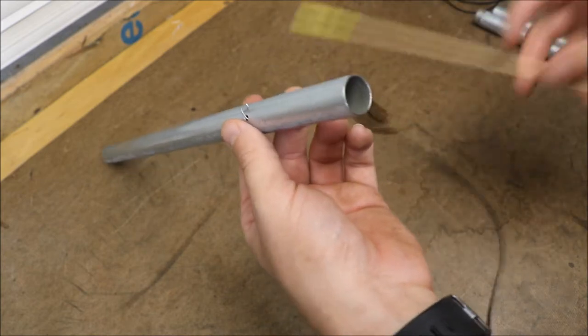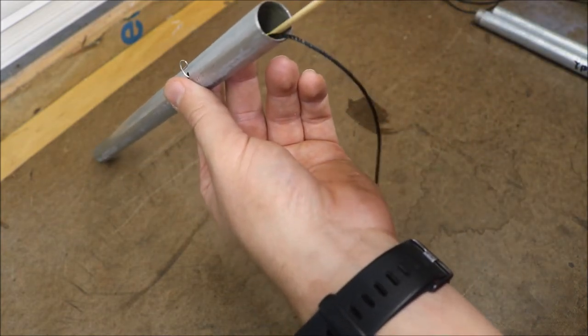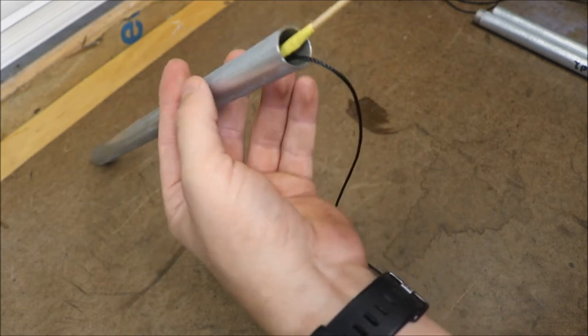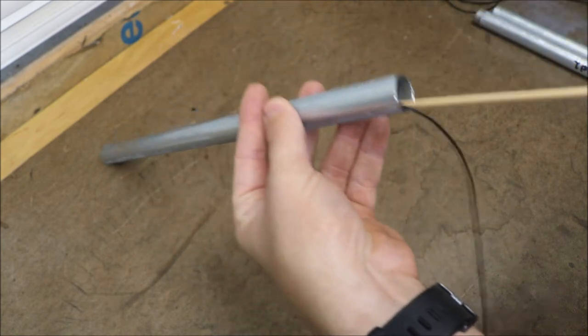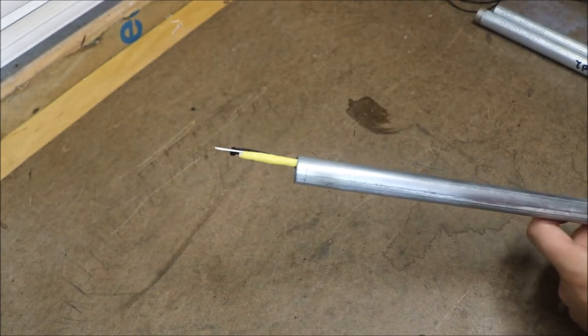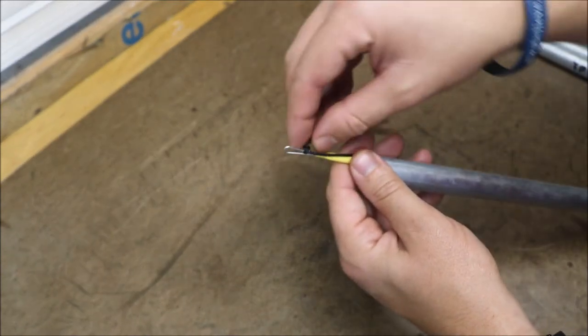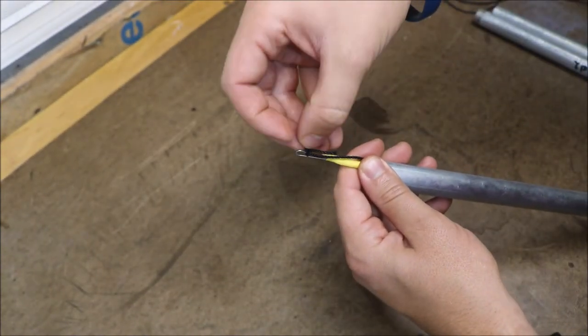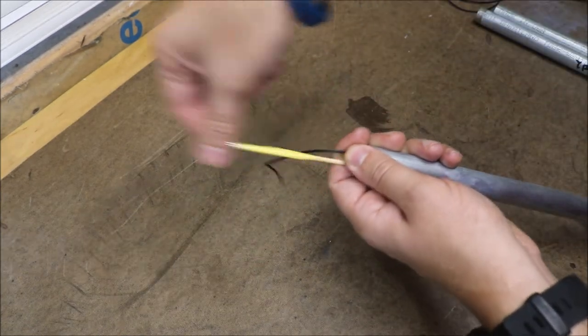So after we do that we're going to take our little feeding wire stick, slide it down through. You might have to take these little wires here on the outside and kind of move them. And then we're just going to feed it through until it pops out the other side just like this. After that then we can untie it and it should pull off just like that. Take the stick out.